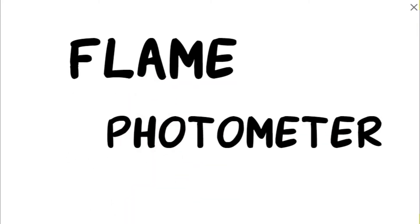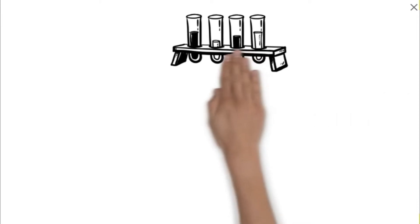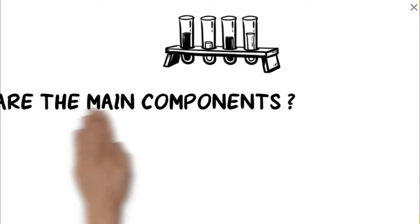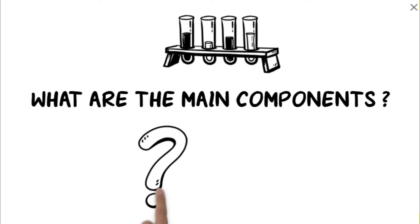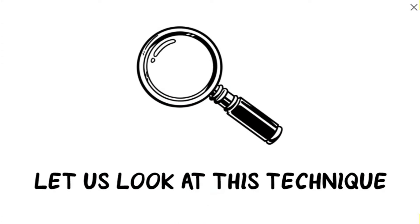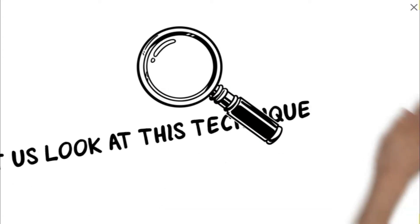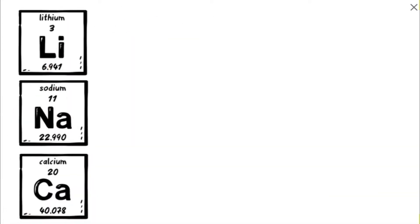In this experiment on the flame photometer, you will learn what the main components of the photometer are, how to operate it, and how to prepare the standards. Let us look at this technique: alkali and alkaline earth metals can be thermally dissociated in a flame.